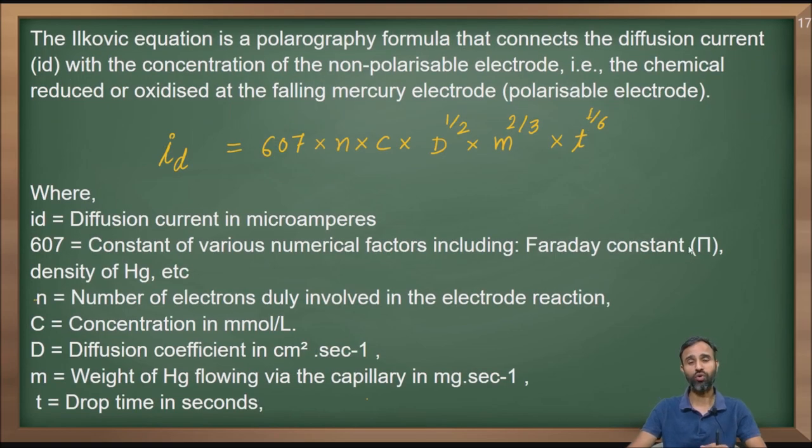The Ilkovic equation is a polarographic formula which connects the diffusion current Id with the concentration of the non-polarizable electrode. That is the chemical reduced or oxidized at the falling mercury electrode, which is a polarizable electrode.